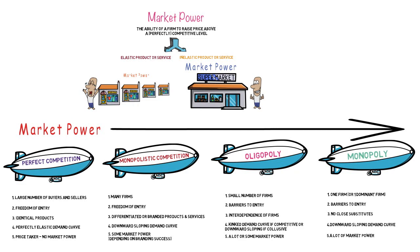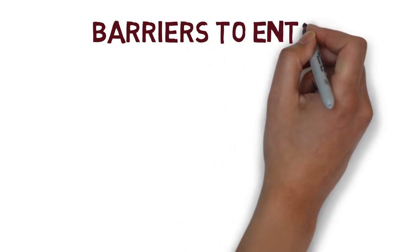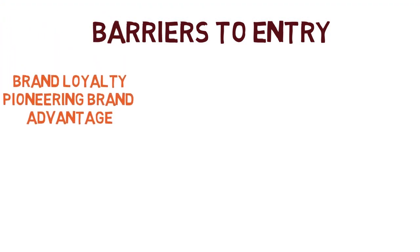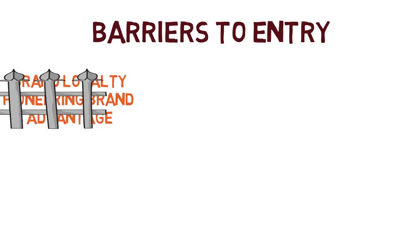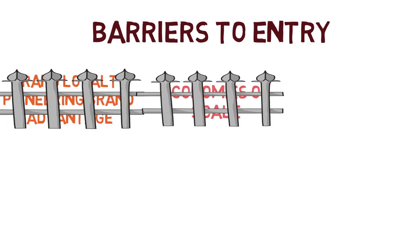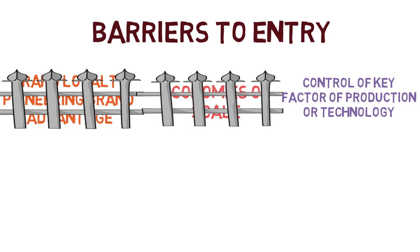Market power changes across market types — very little in perfect competition, increasing up to monopoly which has the highest amount. This is due to barriers to entry. In certain markets you have brand loyalty and pioneering brand advantage, such as Apple who came to market first with the iPhone. Companies that can produce at the lowest unit average cost act as a barrier to entry as well — they can keep competitors out by producing at a lower price. The next barrier is control of a key factor of production or technology.